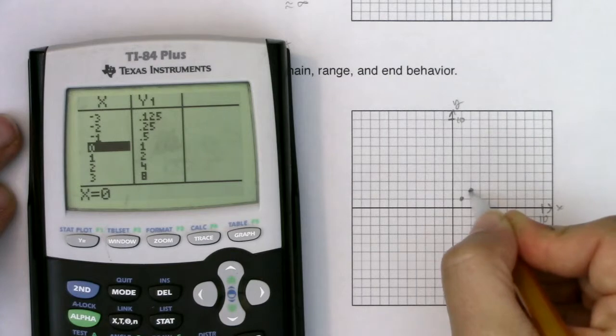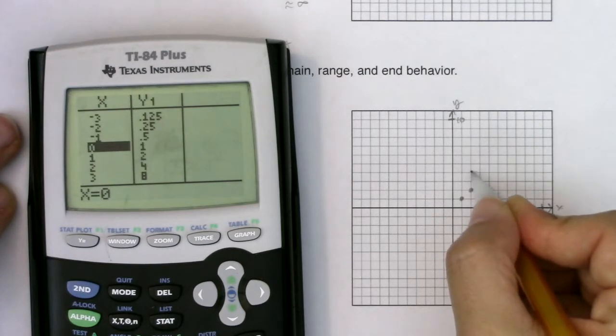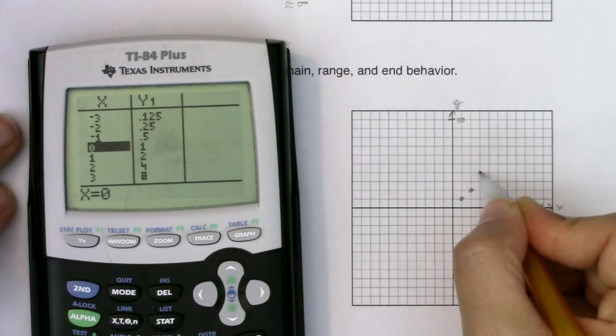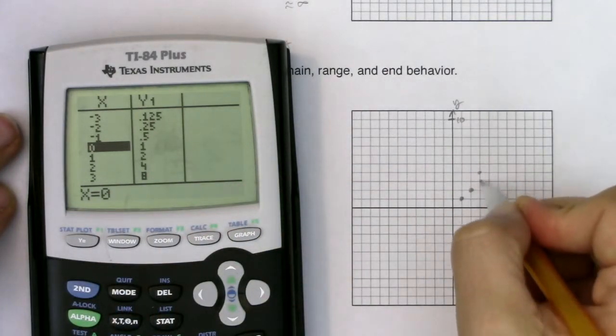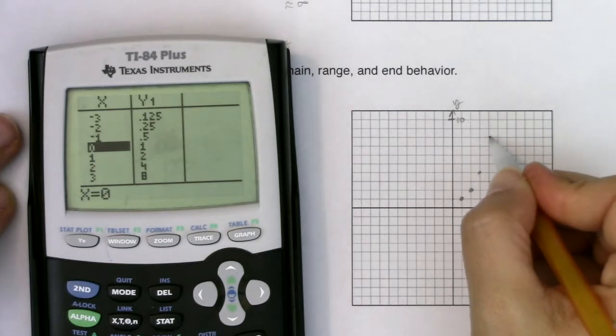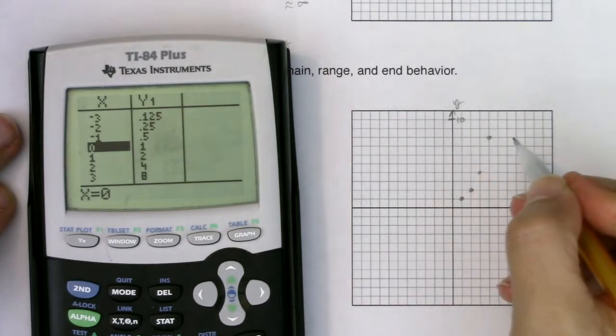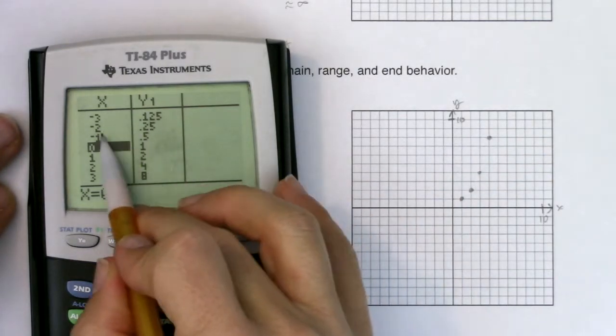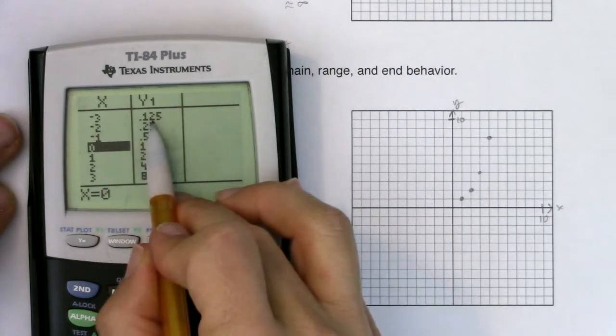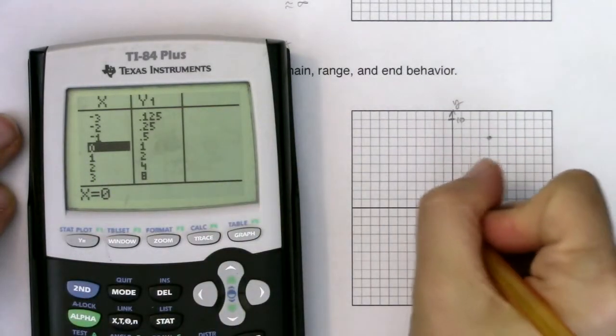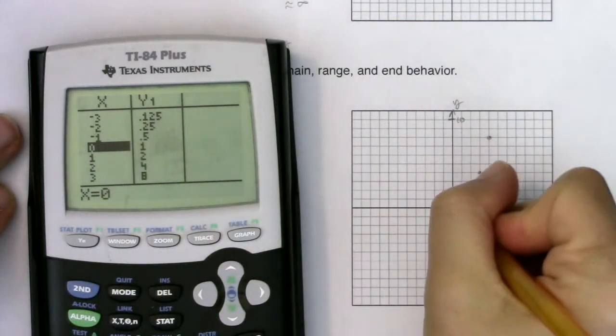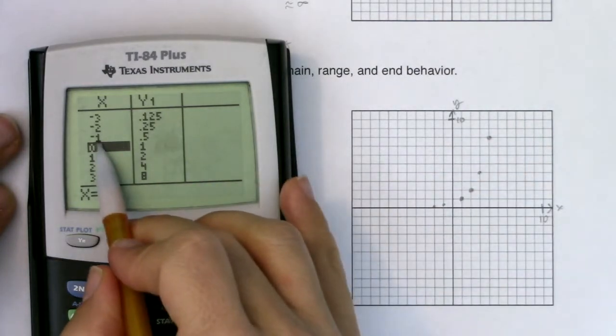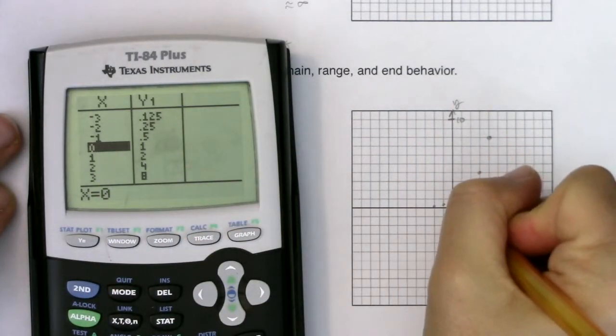If I had the ordered pair (2, 4), I want to shift it right one unit. If I had the ordered pair (3, 8), I want to shift it right one unit. I can do that for these numbers as well: instead of (-3, 0.125) I'll do (-2, 0.125), instead of (-2, 0.25) I'll go (-1, 0.25), and instead of (-1, 0.5) I'll go (0, 0.5).